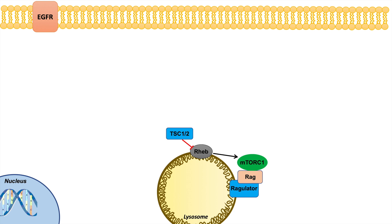The mTOR pathway is involved in activation of protein synthesis and pyrimidine synthesis within the cell. The RAS-RAF-MEK-ERK pathway is also involved in cellular growth processes. In this lesson, we're going to talk about how they interact, and specifically how the RAS-RAF-MEK-ERK pathway regulates the mTOR pathway.